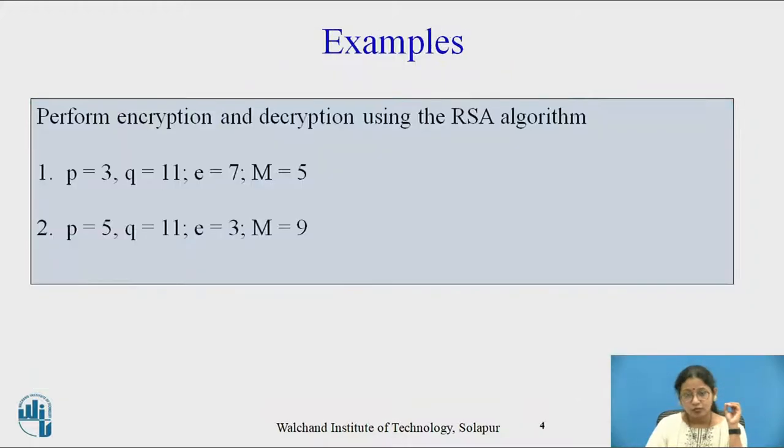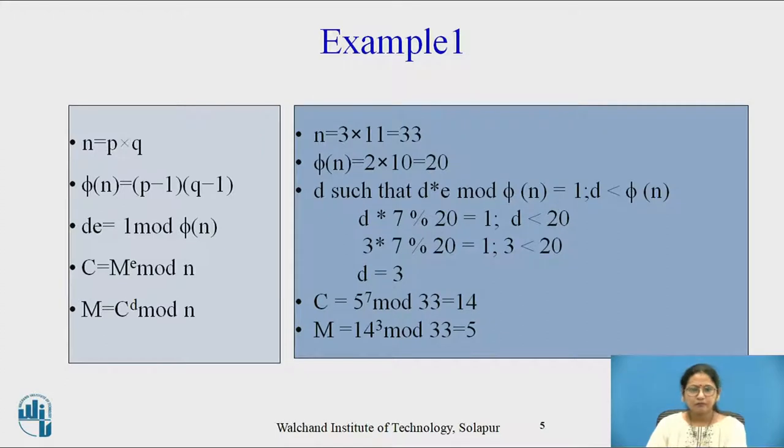Now let's check out the examples. The first one with given content: p equals 3, q equals 11, e equals 7, and m is 5. So e and m is already given, with p=3 and q=11. Sit with a pen and paper.